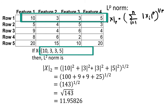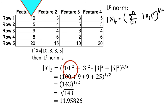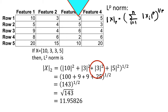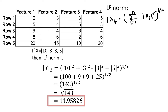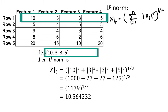Now, what is the L2 norm of the same vector? The L2 norm is |10|^2 + |3|^2 + |3|^2 + |5|^2, which results in 100 + 9 + 9 + 25 = 143. Now take the power of one-half for 143.